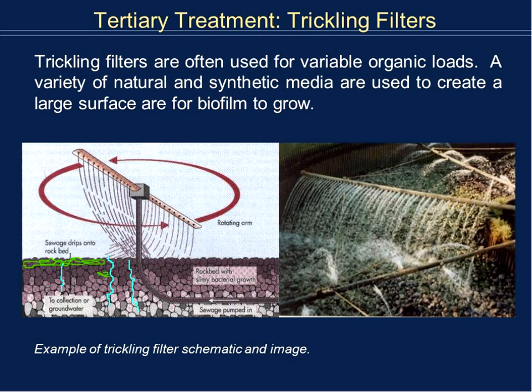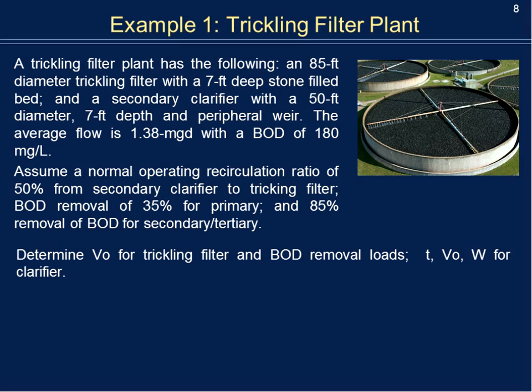The water trickles down to the bottom of the tank. At the bottom, there is a collection area which takes away the more clarified effluent and brings it to the final stages of treatment, which is often chlorination. For our example problem: we have a trickling filter plant with an 85-foot diameter trickling filter that is 7 feet deep, filled with stone. After that, there's a secondary clarifier — another settling tank — that is 50 feet in diameter and 7 feet deep.